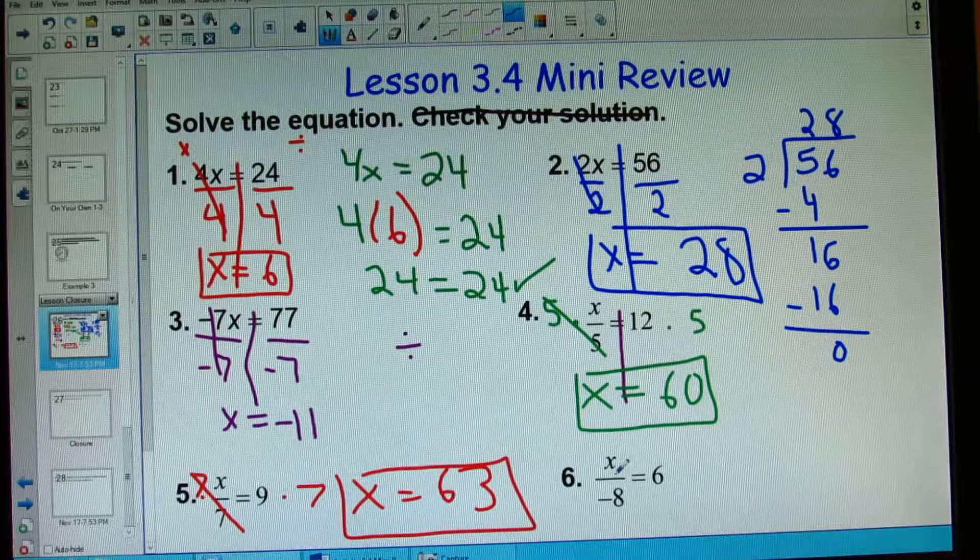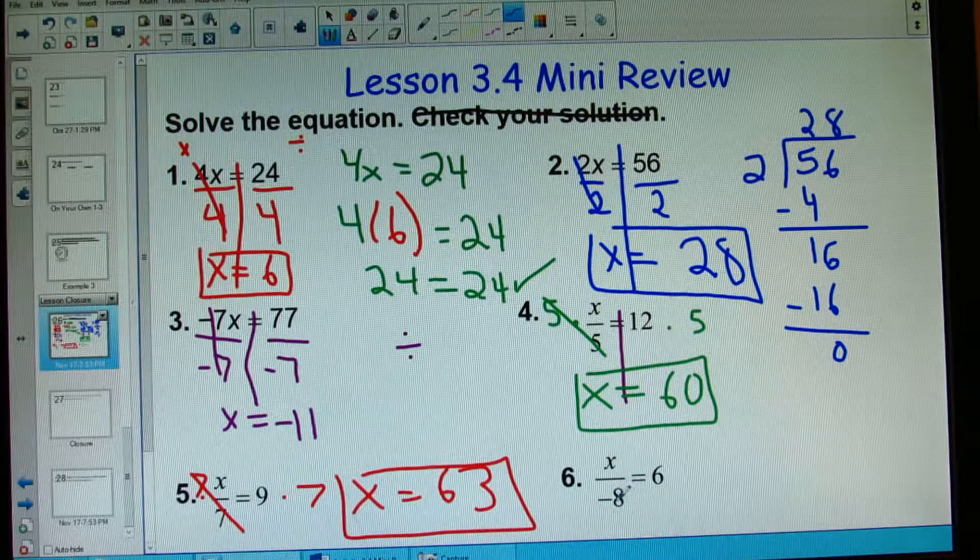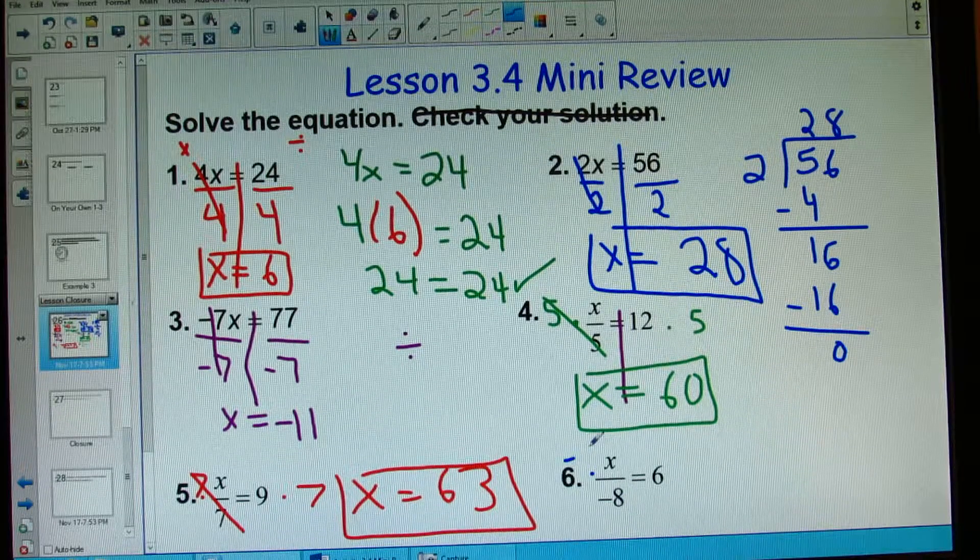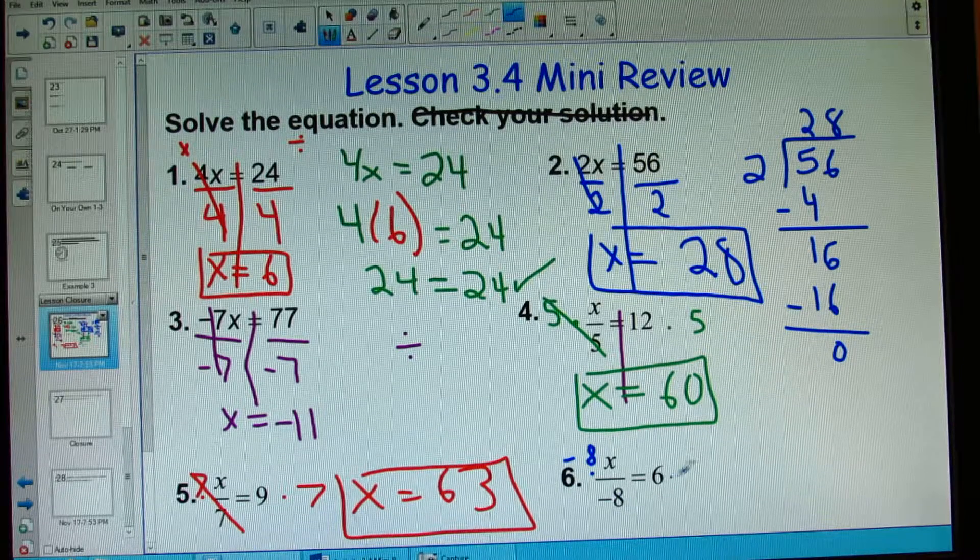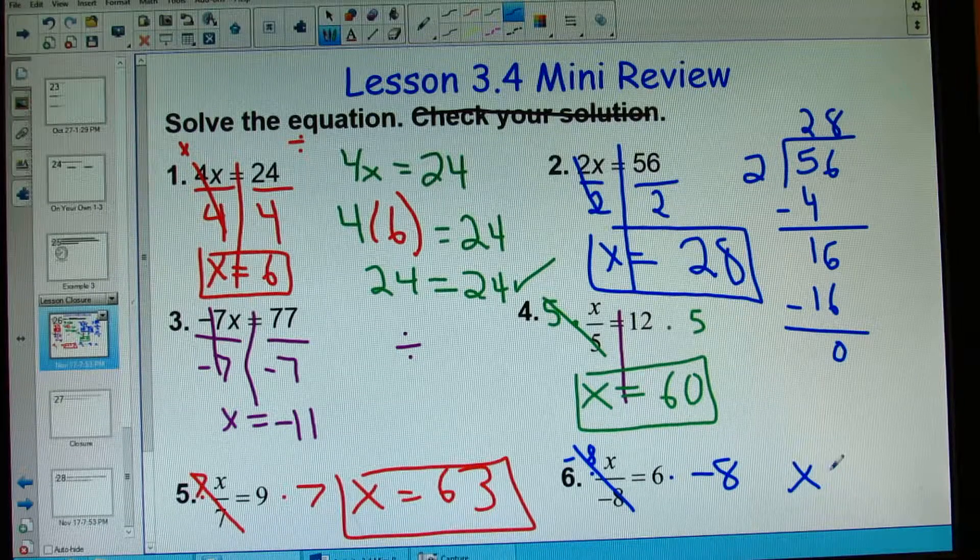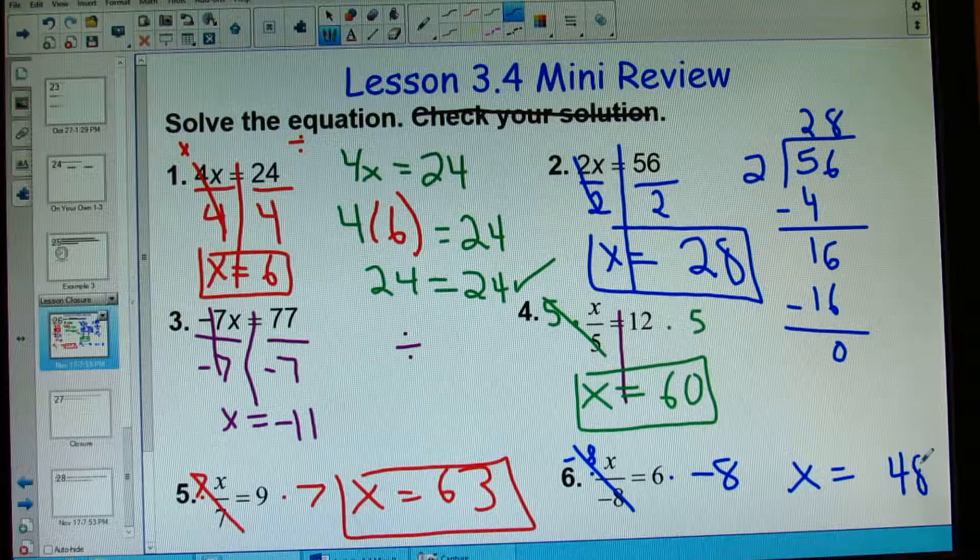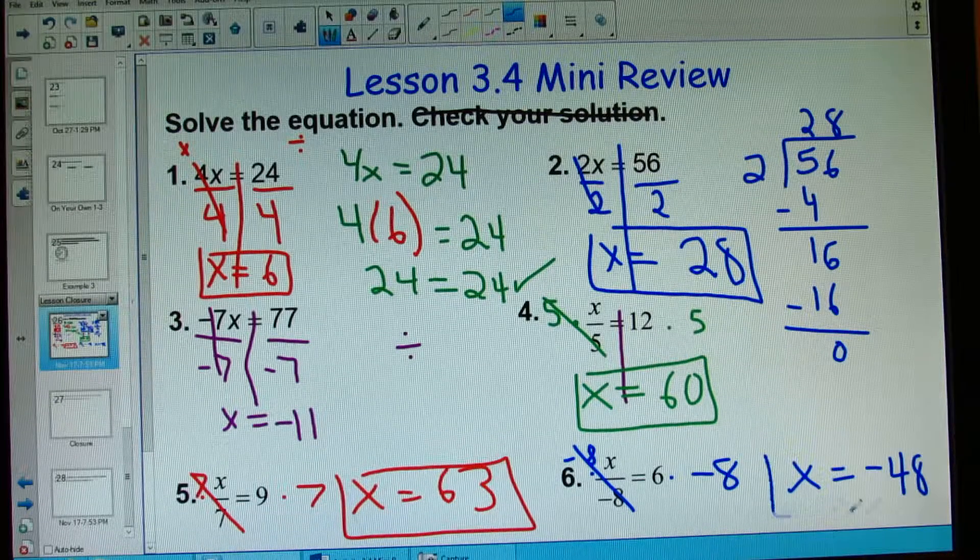And finally, x divided by negative 8. Same thing with my negative 7. I need to multiply by negative 8, not just 8, in order for the negative 8 here to cancel out. 8 times 6 is 48. Because of those different signs, my answer will be negative 48.